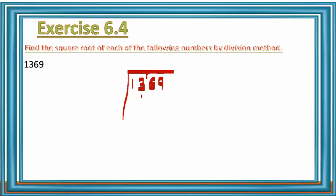The first pair is 13. The square number less than or equal to 13 — three threes are 9, four fours are 16 — so we take 3. Write 3 in the quotient place and also as the divisor. Three threes are 9; write 9 below 13. Then double the divisor: 13 minus 9 is 4.